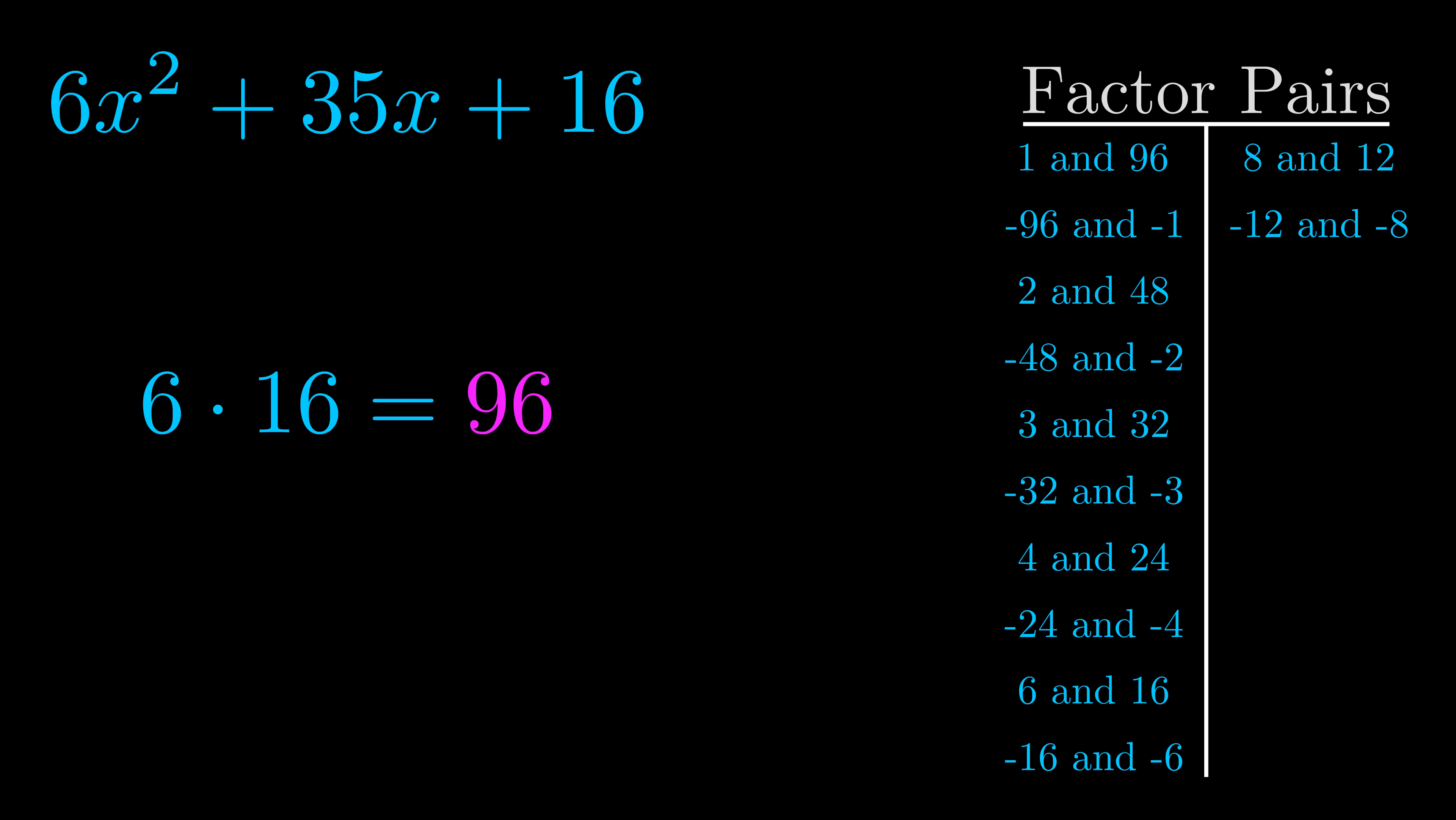The b value is the coefficient on the x term. That's the middle term, the one that we haven't done anything with yet. And really, this is the only factor pair that we need.